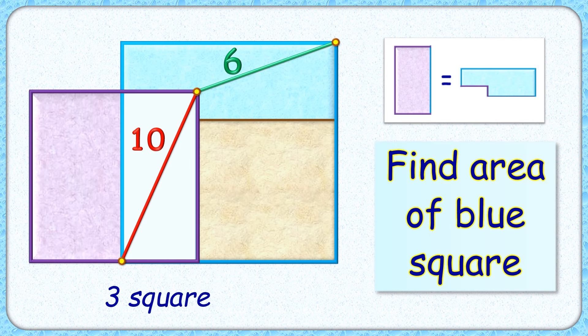Welcome everyone to this interesting question where given to us are three squares: the purple square, the brown square, and the big blue square. Length of this red line segment and green line segment is given as 10 and 6 centimeters each. Additionally, it's given that area of this purple rectangle and this blue region is equal.